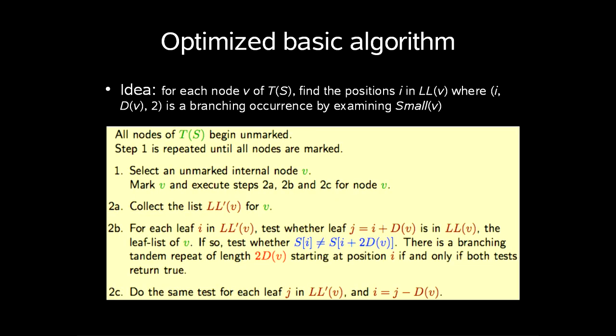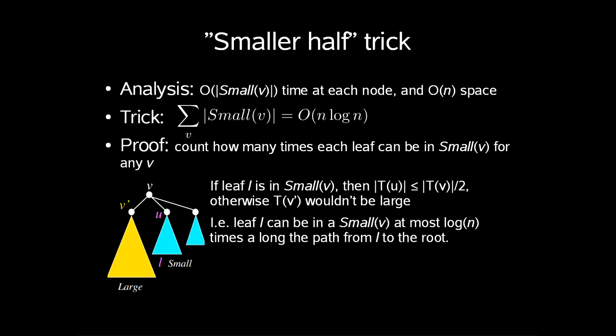So we add a new step called 2c where we do the same test for each leaf j in LL'(v) and i is j minus D(v). The test is if i is in LL(v'), so to test Large(v), and if S[i] is different from S[i+2D(v)]. The running time is bounded by the size of Small(v) and the space is still linear.